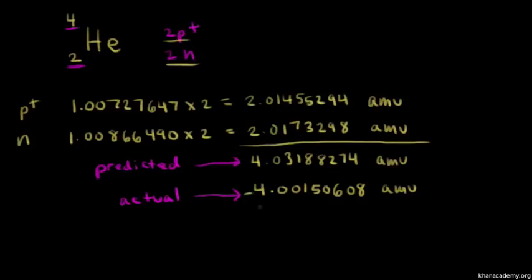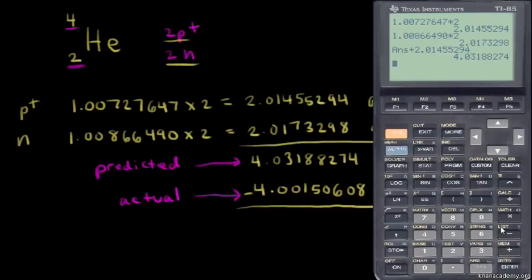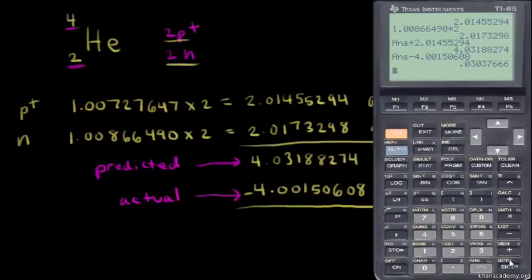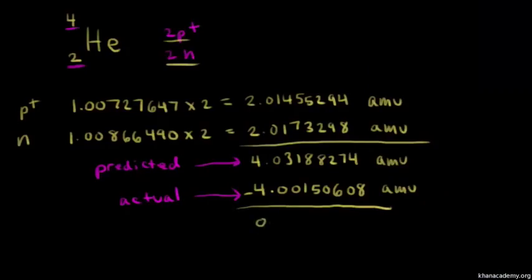Let's calculate the difference between those two numbers. If we subtract the actual from the predicted, we can see the difference. The actual mass is 4.00150608 AMUs. Subtracting gives us 0.03037666 AMUs. This is the difference between those two numbers, and we call this the mass defect.